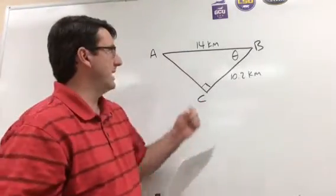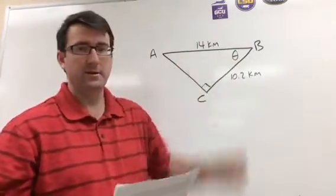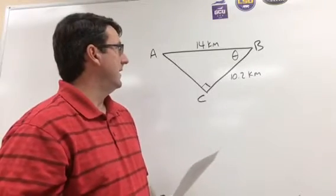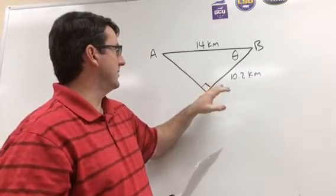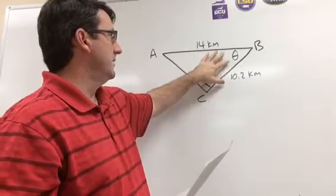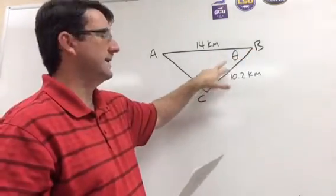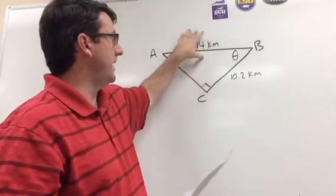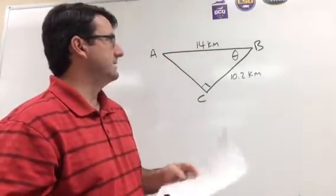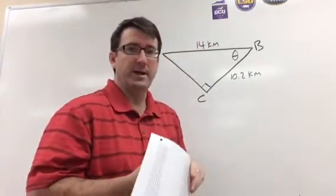All right, number two. We're asked to find this angle, which we're calling theta. And so in this one, we know the adjacent side to that angle. We know the hypotenuse, and so adjacent over hypotenuse is cosine.